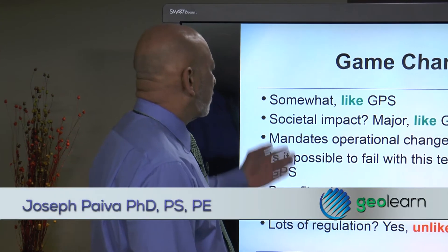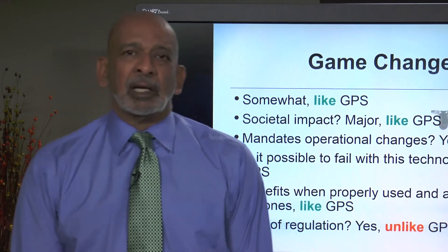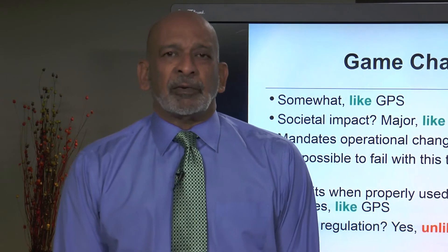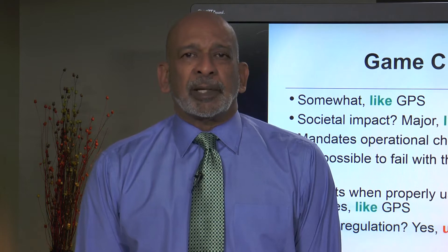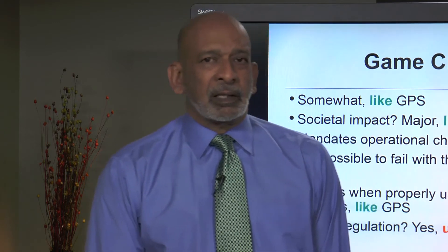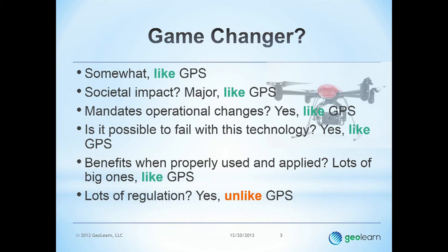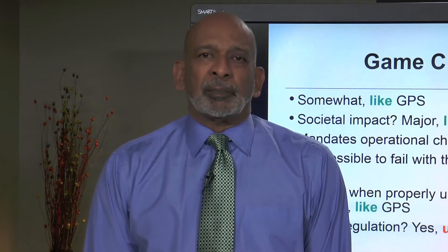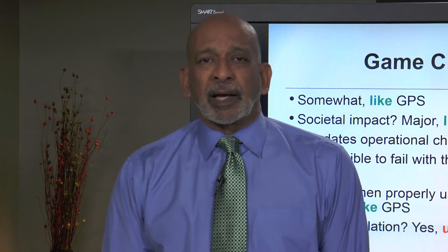Do unmanned airborne systems have societal impact? Yes, major — just like GPS. Today, almost everyone who has a cell phone has GPS, and we probably wouldn't have envisioned that when GPS was introduced into our field back in the 80s. In that same way, unmanned airborne systems will have major societal impact. We just had an introduction from Amazon about possibly using robotic helicopters or rotorcraft to deliver packages, for example.